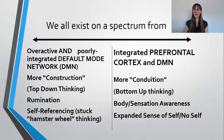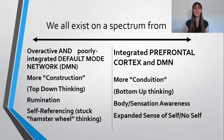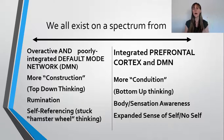The idea is that we want our default mode network to be more integrated. I've given some suggestions for cultivating activities — like the wheel of awareness and interoception — and all those things help us have that sweep loop capacity so we can be in the open plane of possibility as we're aware of peaks of activation.